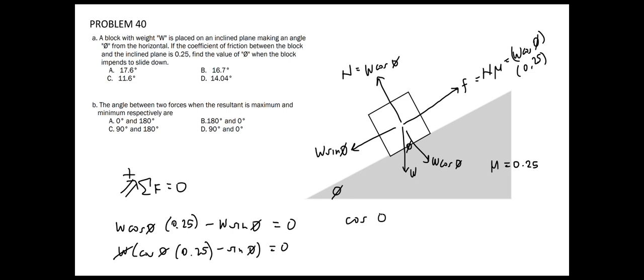So we get cosine of phi times 0.25 equal to sine of phi. And divide both sides by cosine of phi. We have sine divided by cosine. Now we can solve for phi by taking the arc tangent of 0.25.